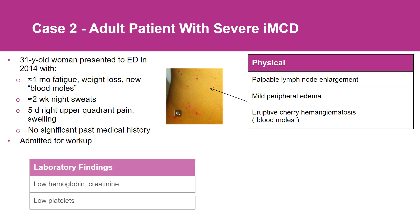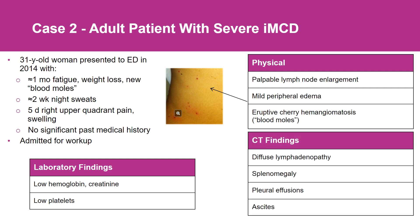Laboratory testing found mild anemia, elevated creatinine, and mildly low platelet counts. Given the multicentric lymphadenopathy, a full-body CT was performed, which confirmed diffuse lymphadenopathy even within the thorax and pelvis, and also revealed splenomegaly, pleural effusions, and ascites.